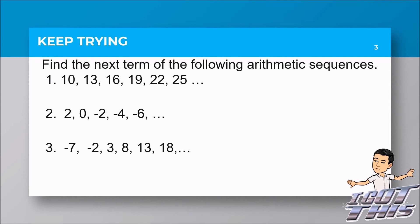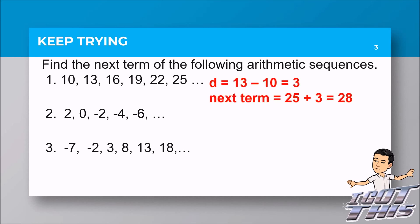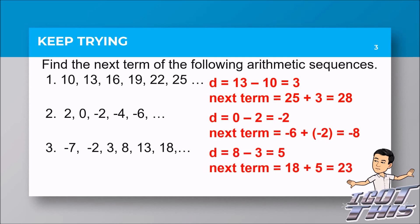Find the next term of the following arithmetic sequences. Number one: 10, 13, 16, 19, 22, 25. Get the common difference: 13 minus 10 equals 3. Take the last term of 25 and add the common difference of 3, so the next term is 28. For items two and three, pause the video and check your answers later. The answers are negative 8 and positive 23.